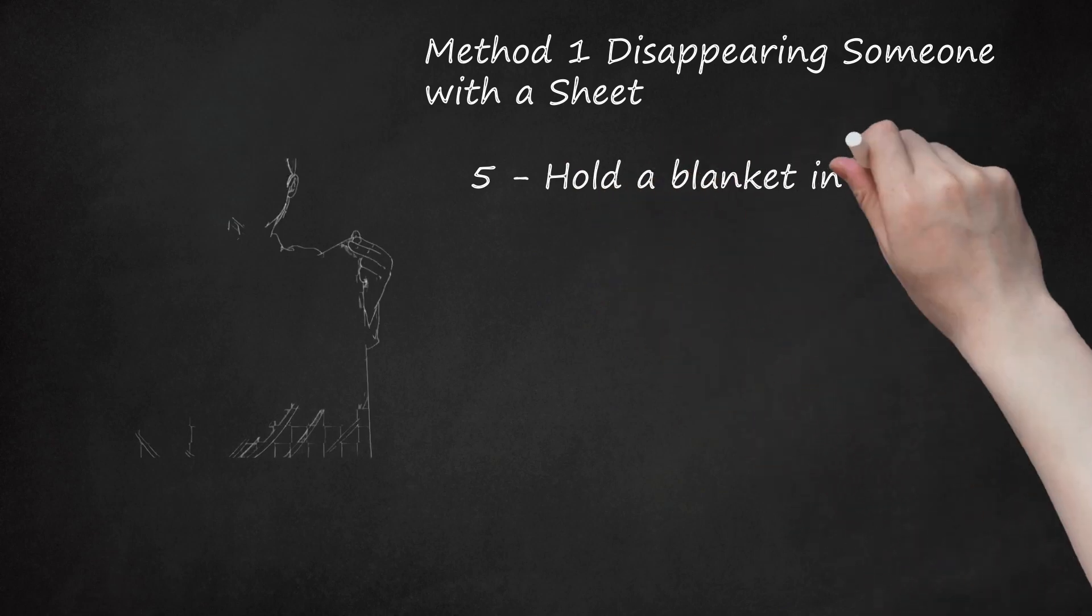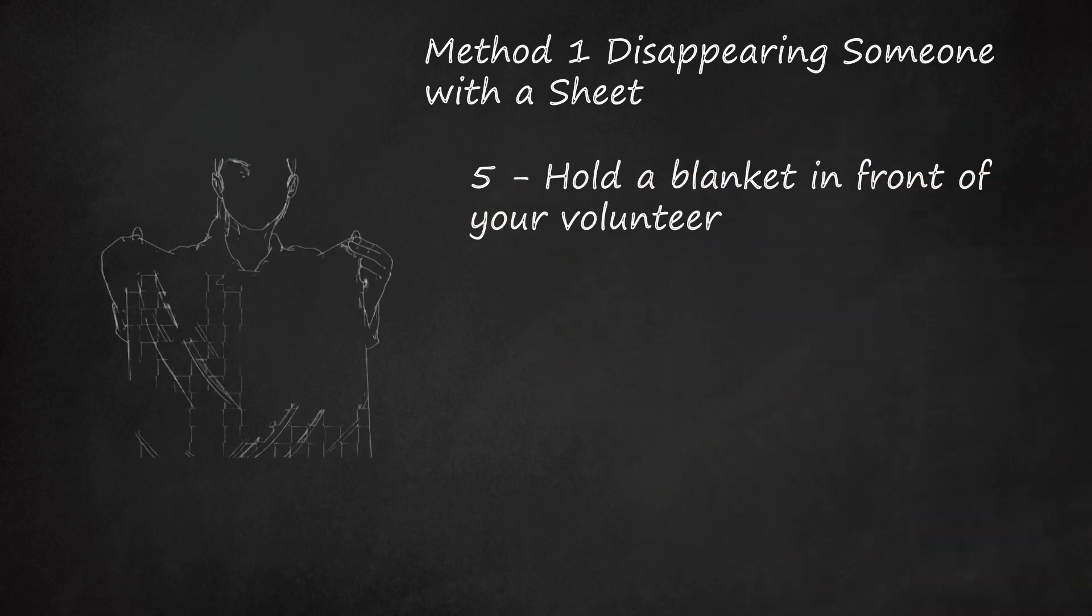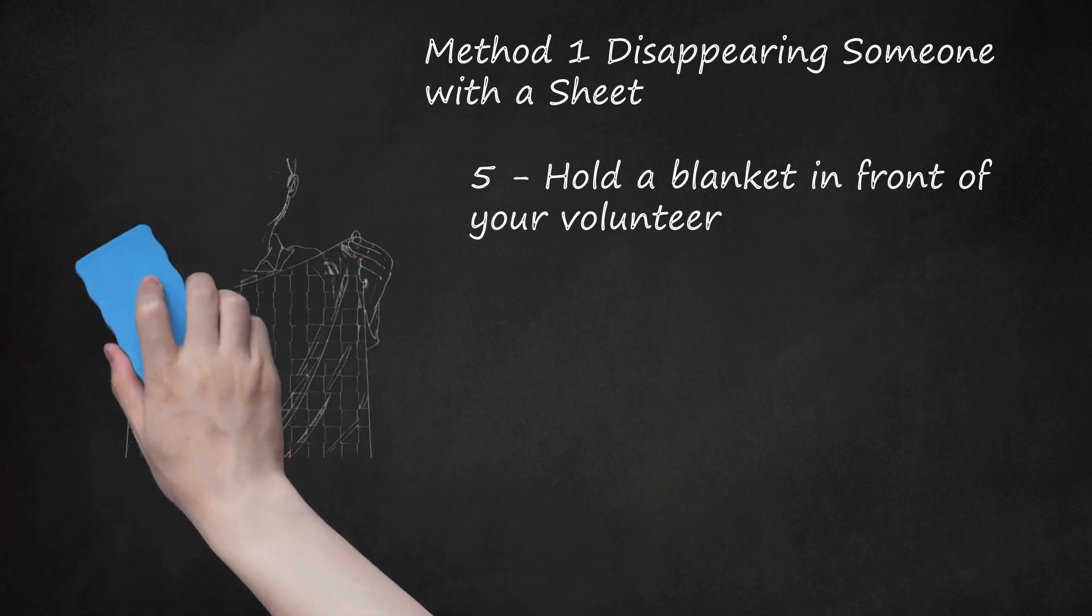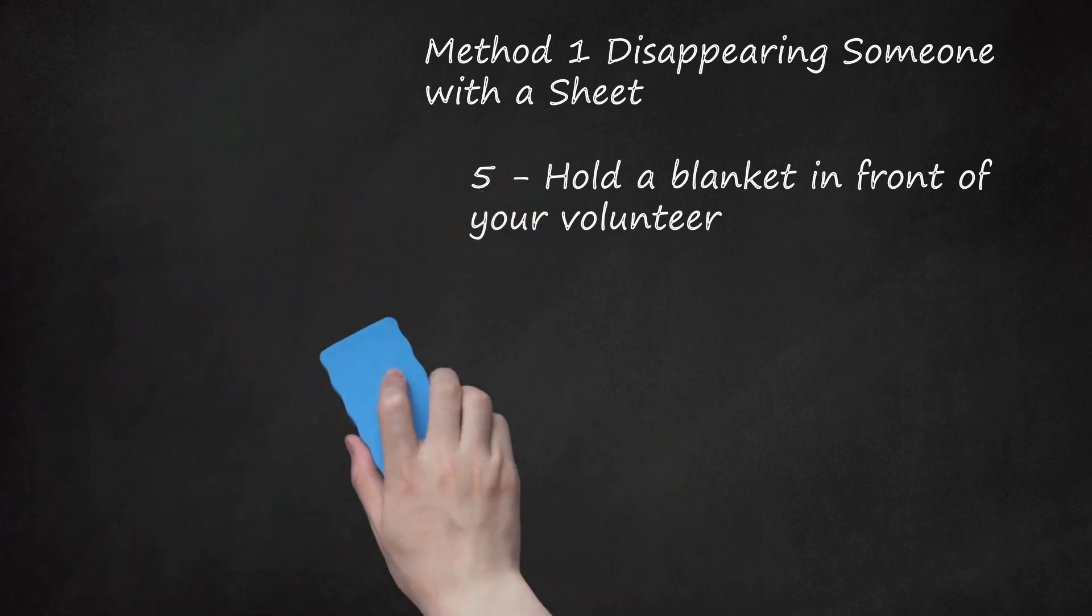Step 5 - Hold a Blanket in Front of Your Volunteer. Make sure the blanket is long enough so that it covers her feet. Immediately after you've secured the blanket, your volunteer should make her move and hide. Silence is key to being believable. Say your first trigger word once you've secured the blanket. This will let your volunteer know it's time to hide.